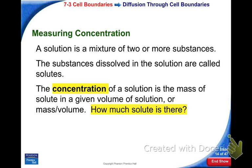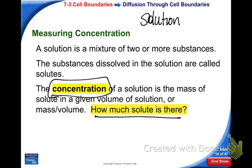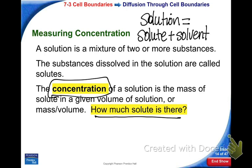How do we predict what enters and leaves the cell? That has to do with concentration. Concentration is a measurement of how much solute there is in a solution. A solution is made up of two or more solutes and a solvent. A solute plus a solvent combines together to make a solution.